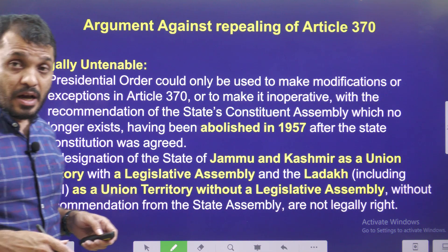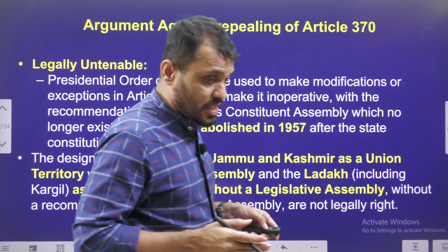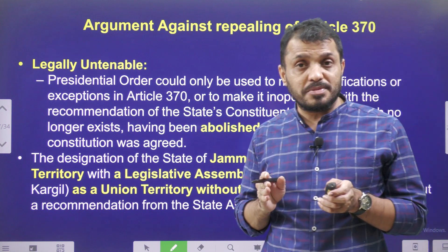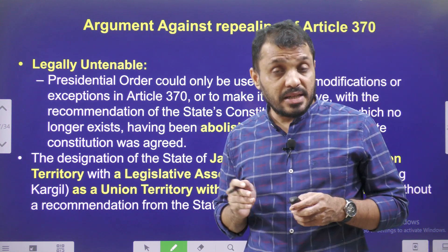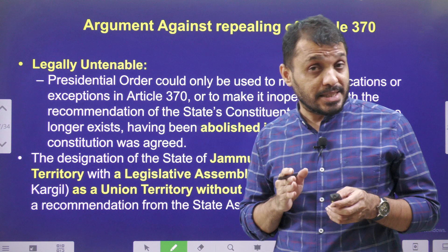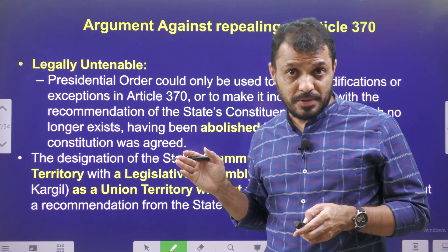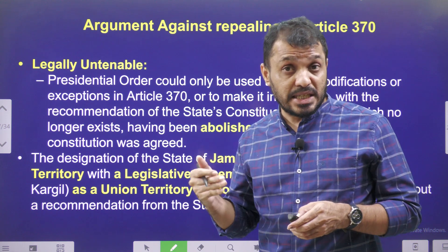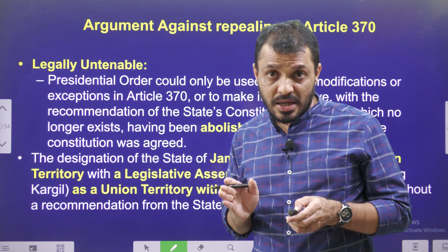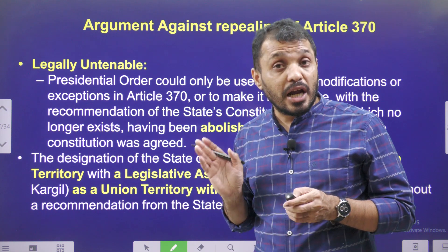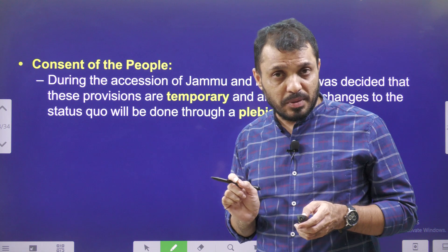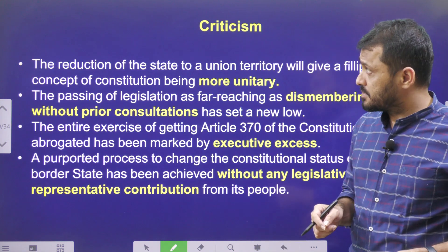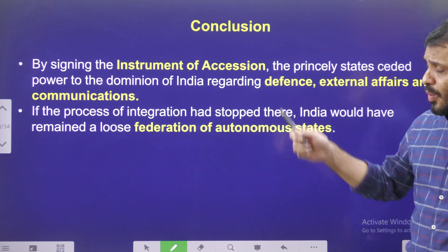However, certain people criticized the abolition of Article 370 on the grounds that the consent of the J&K assembly was not obtained. At the time of revocation, the J&K assembly was not in existence and President's Rule was in place — making the move undemocratic and an excess of executive action. All these criticisms were addressed by the Supreme Court, which upheld the validity of the Article 370 revocation.